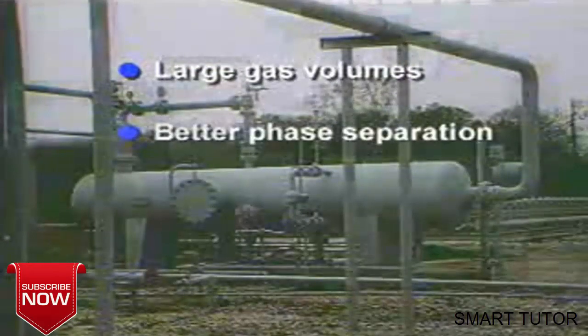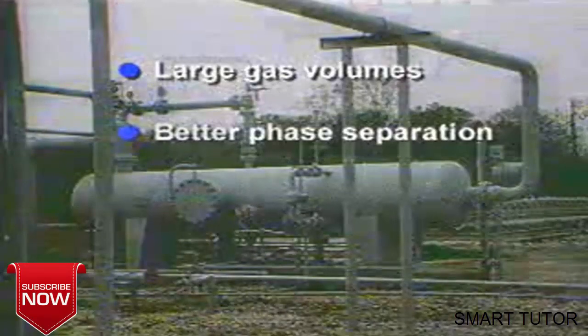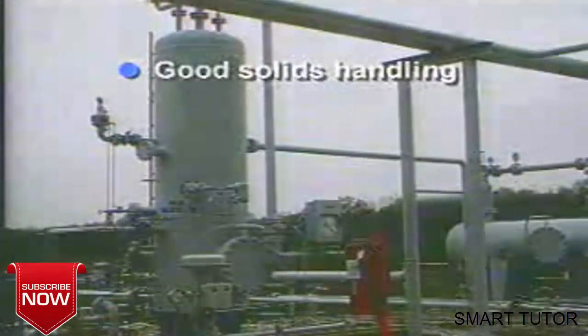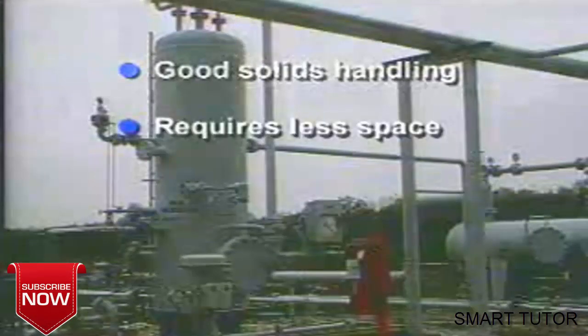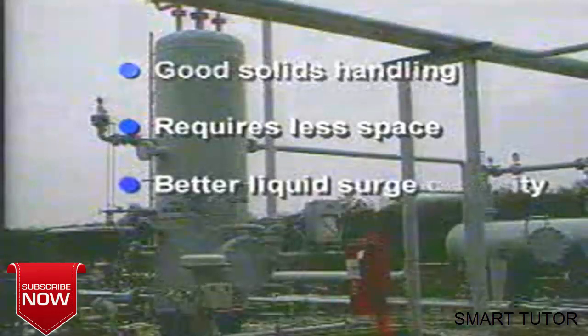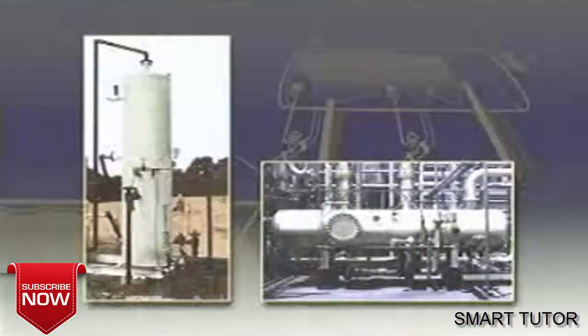It does not handle solids as well as a vertical separator and requires more space. A vertical separator, on the other hand, has good solids handling capability, requires far less space than a horizontal separator, and has much better liquid surge capacity, but it is more difficult to service.